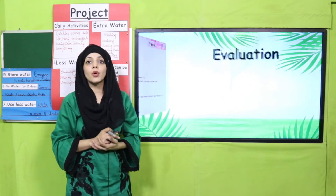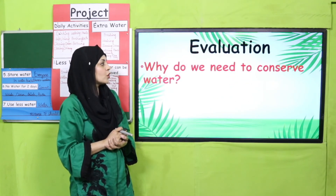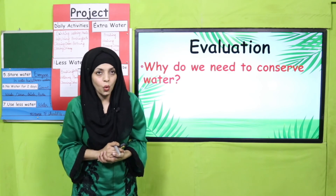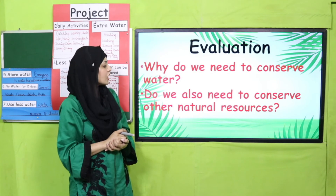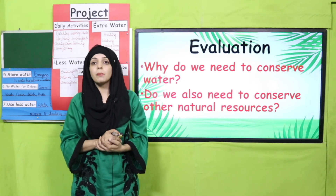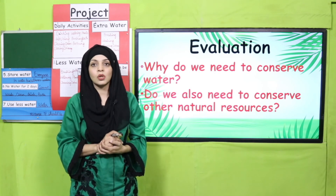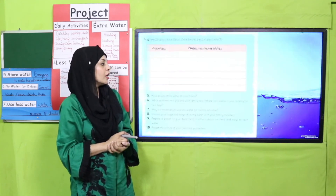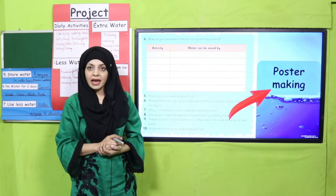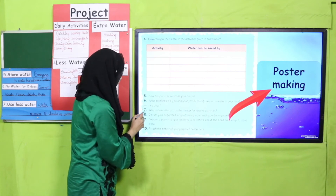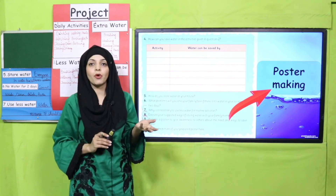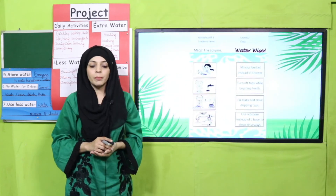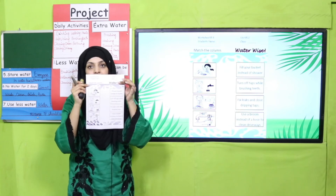Your practice pages are done. For evaluation: why do we need to conserve water? Because it is a limited resource. Do we also need to conserve other natural resources? Yes, we must conserve and save other natural resources too. For homework, you will do the poster making, discussion questions seven, eight, nine, and ten. You will perform your project at home, do the observations, make your project, and a worksheet will be provided to you in print form by your teacher.